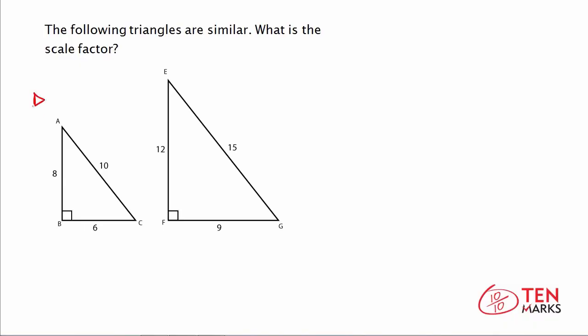Well as you can see we have triangle ABC over here on the left and triangle EFG over here on the right. Now side AB, which is right here, corresponds to side EF in the larger triangle.